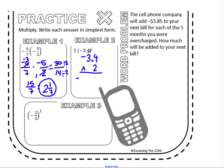I'm going to multiply as if it were 34 times 2, ignoring the decimal for now. 4 times 2 is 8; 2 times 3 is 6. Different signs — answer is negative. Then I count how many decimal places are in the problem: there is one decimal (4 tenths), so I need one decimal in my answer. My final answer is negative 6 and 8 tenths.